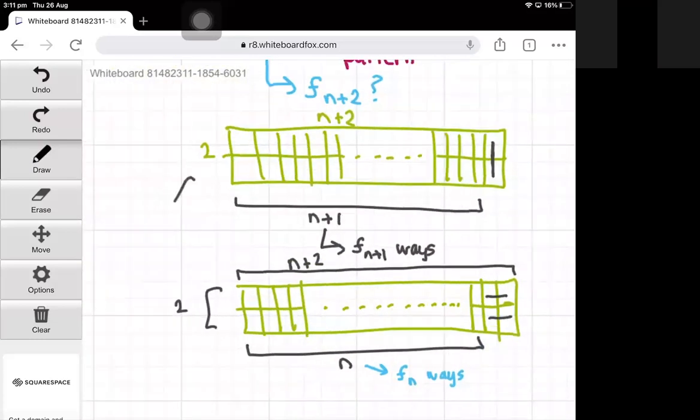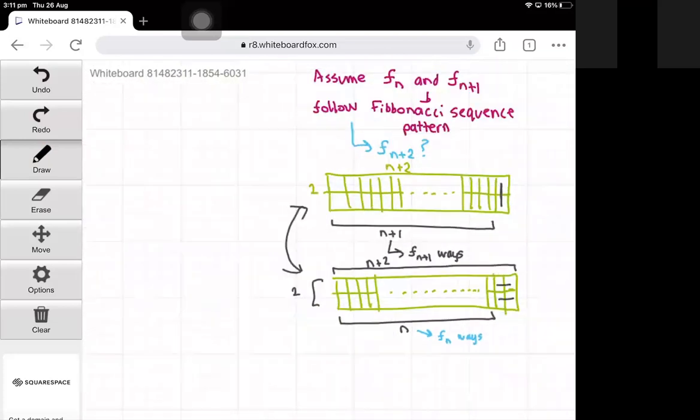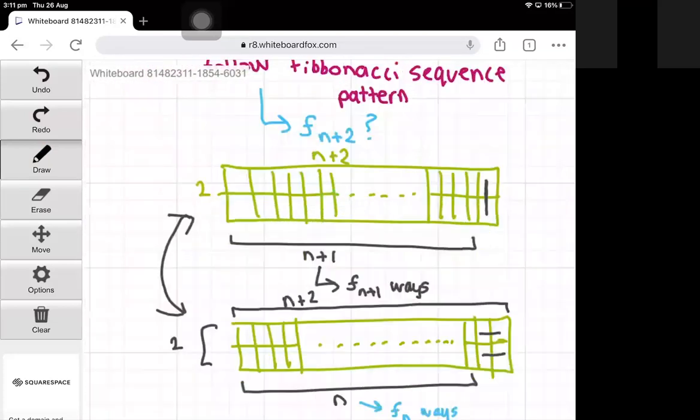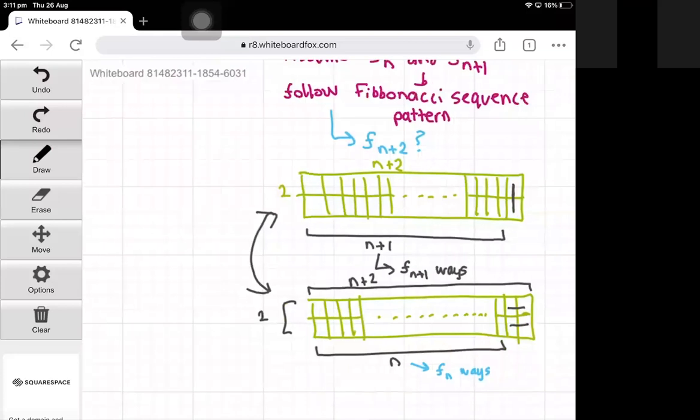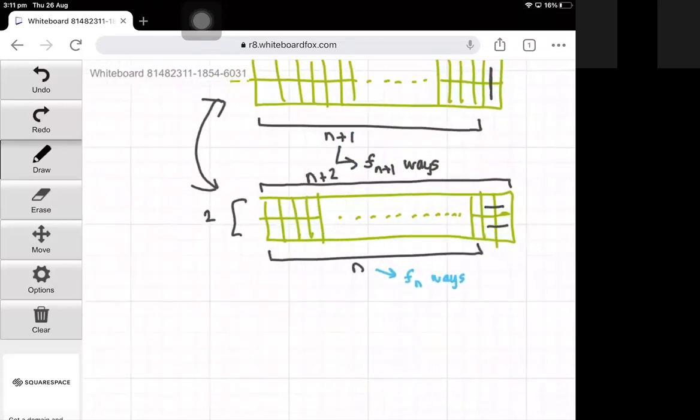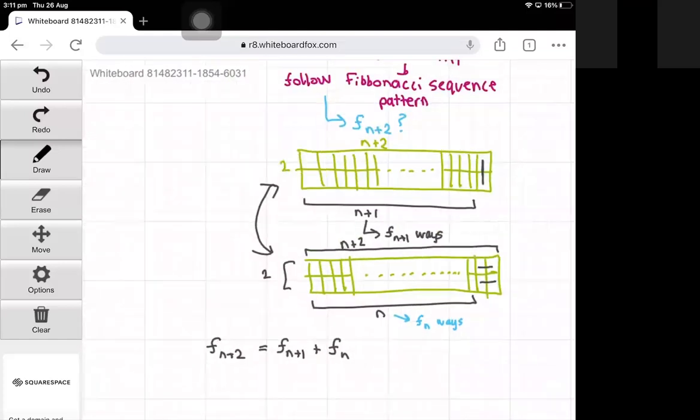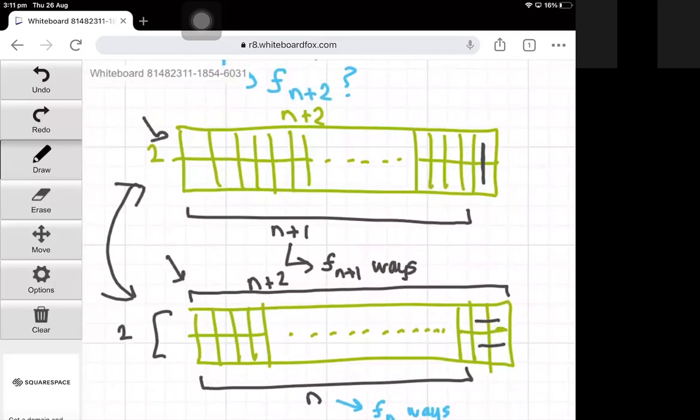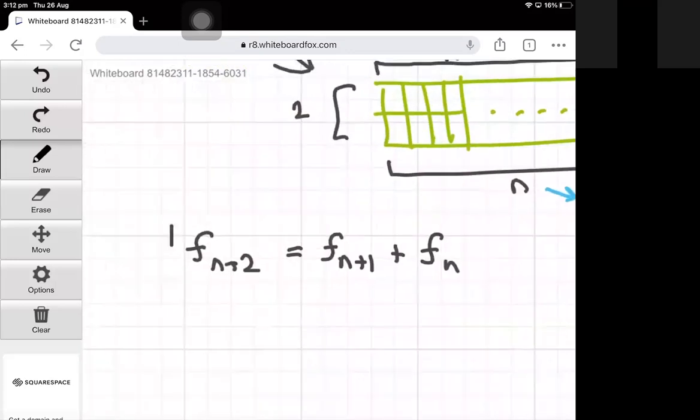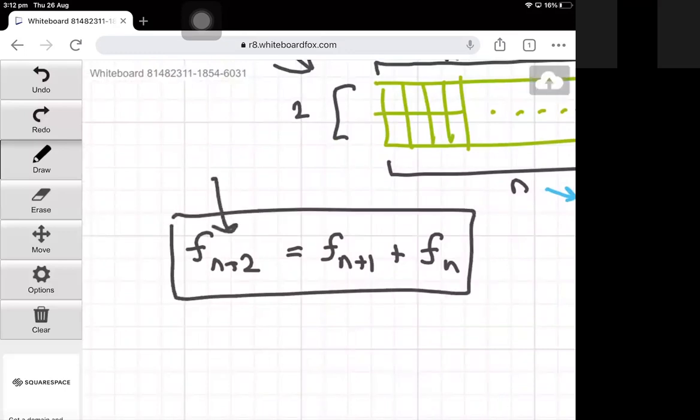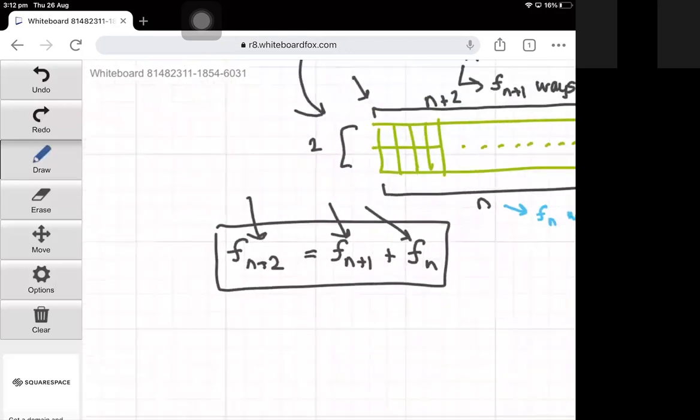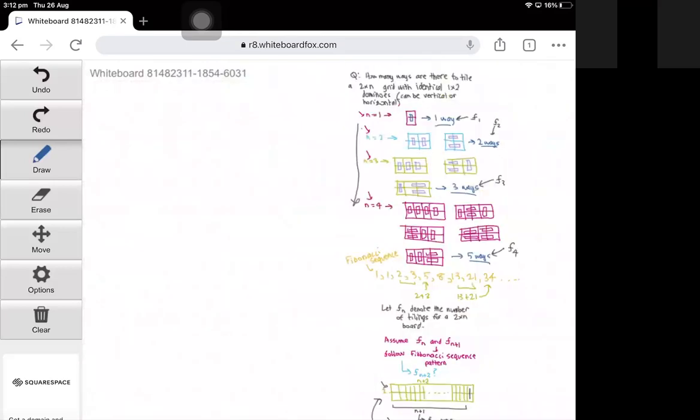In these two different cases, to find the total number of ways for F of n plus 2, we can just add up these two different cases. The first case we get F of n plus 1, and the second case we get F of n, and this will equal F of n plus 2 because these two cases are the only two possible cases. In fact, we have each next term in the F sequence is a sum of the two previous terms in the F sequence, and it follows the Fibonacci number pattern.